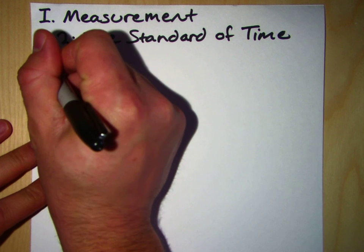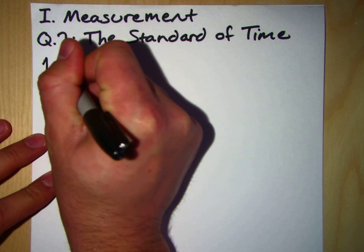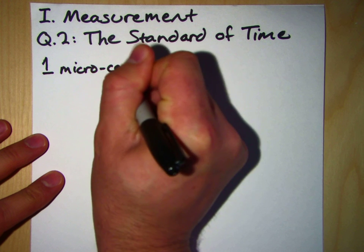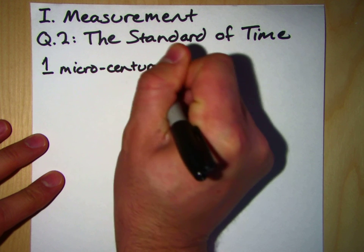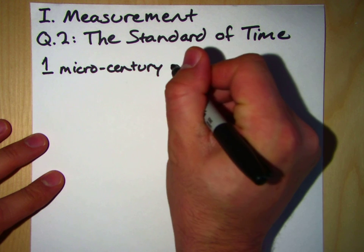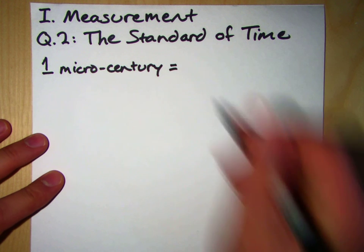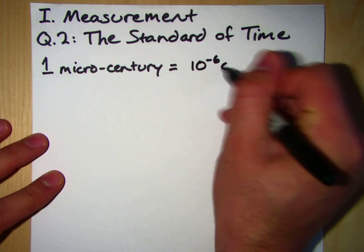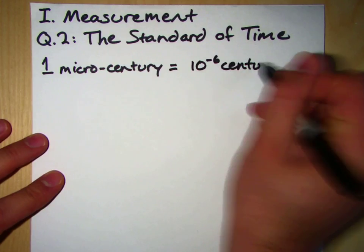And I can tell you right now that one micro-century... is the prefix for one millionth, or 10 to the minus 6. So one micro-century is equal to 10 to the minus 6 centuries.